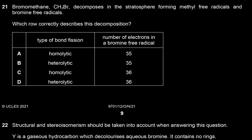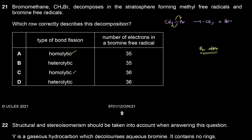Bromomethane decomposes in the stratosphere forming methyl free radicals and bromine free radicals. What type of bond fission is this? One electron goes to the CH₃ and one electron goes to the bromine — that's homolytic fission, equal bond breaking. A bromine free radical is just a bromine atom. Bromine has atomic number 35, so it has 35 protons and, since the radical is neutral, 35 electrons. The answer is A.